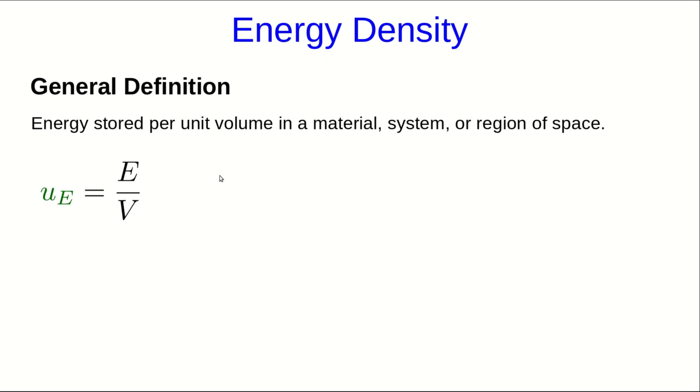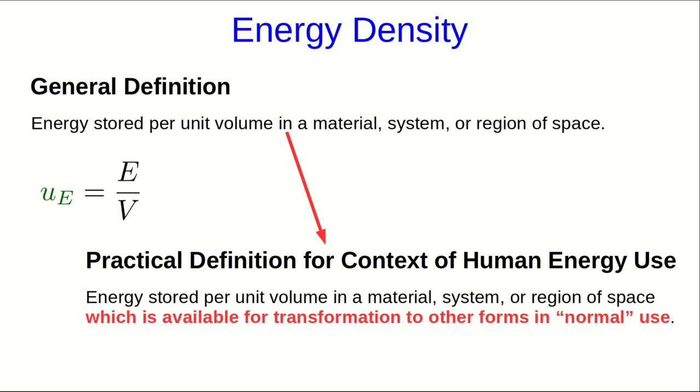So while the general definition of energy density is that it is all of the energy per unit volume in a material system or region of space, for most practical purposes, what we actually mean is some specific type of energy available for transformation under some particular process that we might think of as the normal use.